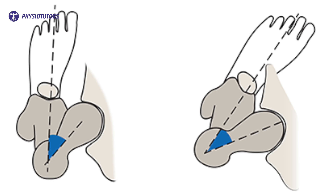Hi and welcome back to Physiotutors. Lower extremity alignment can influence the load distribution on the joints and mechanical efficiency of the muscles. Among these different alignment variables, femoral anteversion has been identified as a risk factor for hip and knee joint injury.